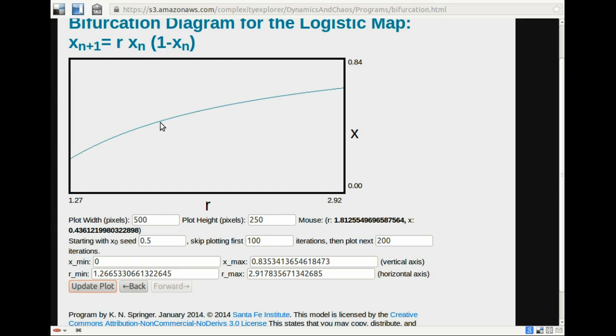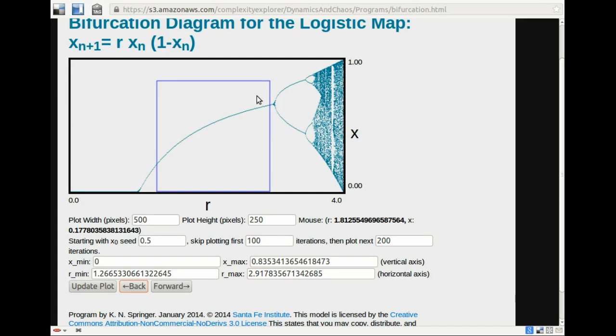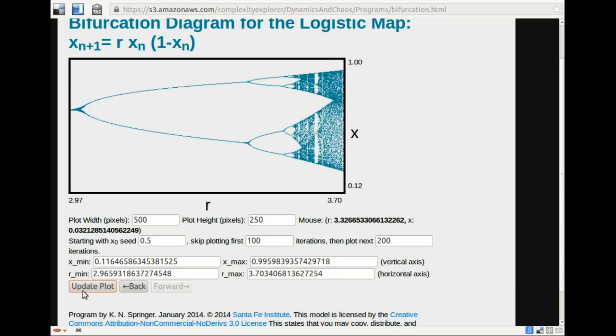The next question asked about bifurcations from period 2 to period 4. So let me go back and zoom in here. So bifurcation from period 2 to period 4, that occurs around here. So when there are two lines,